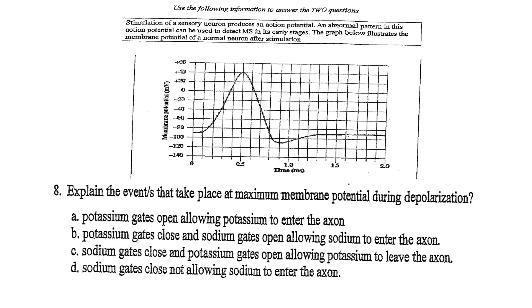If we take a look at the next question for this, here's the graph again, we won't have to interpret it again, but it says explain the events that take place at maximum membrane potential during depolarization. So they're asking right here, what happens? So we already said here that sodium gates are open and sodium rushes in. That's what creates this positive environment inside the neuron.